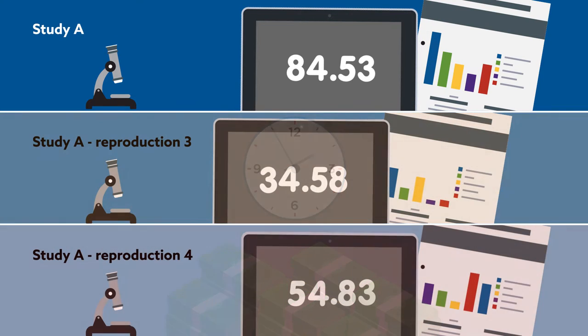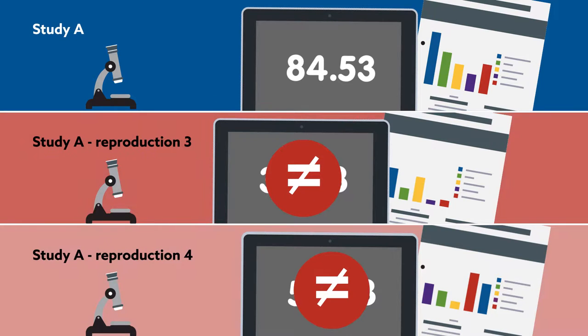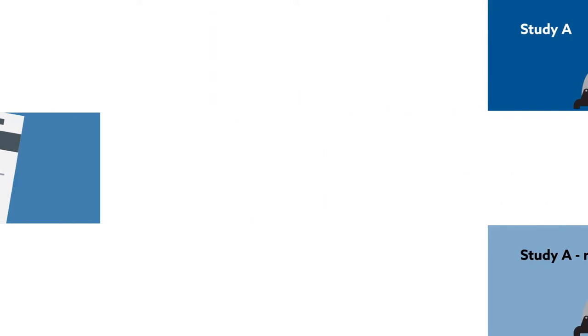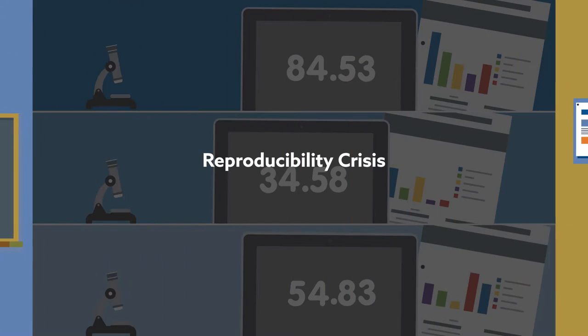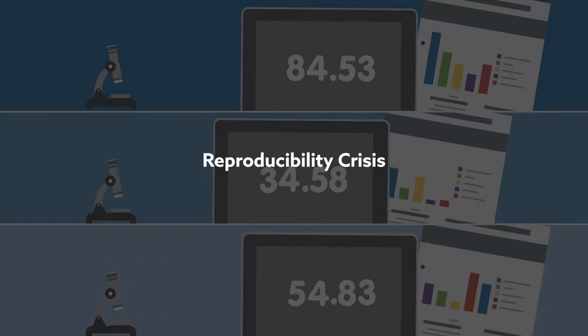More troubling still is that when we do try to repeat things, we often can't reproduce the results. After several high-profile failures to reproduce results in fields such as biomedical science and psychology, many scientists now think we're in the middle of a reproducibility crisis that threatens to undermine the public's faith in science.